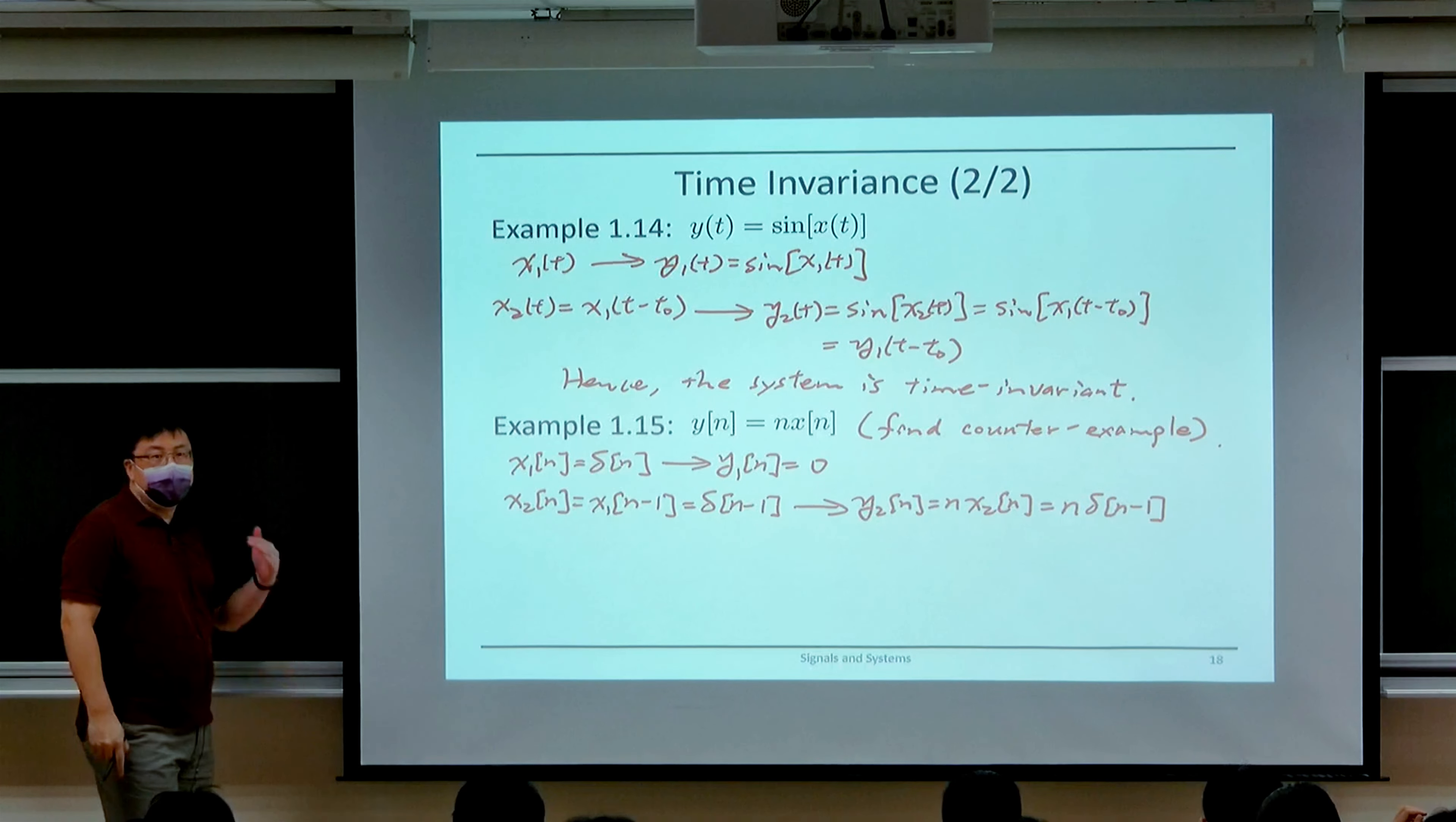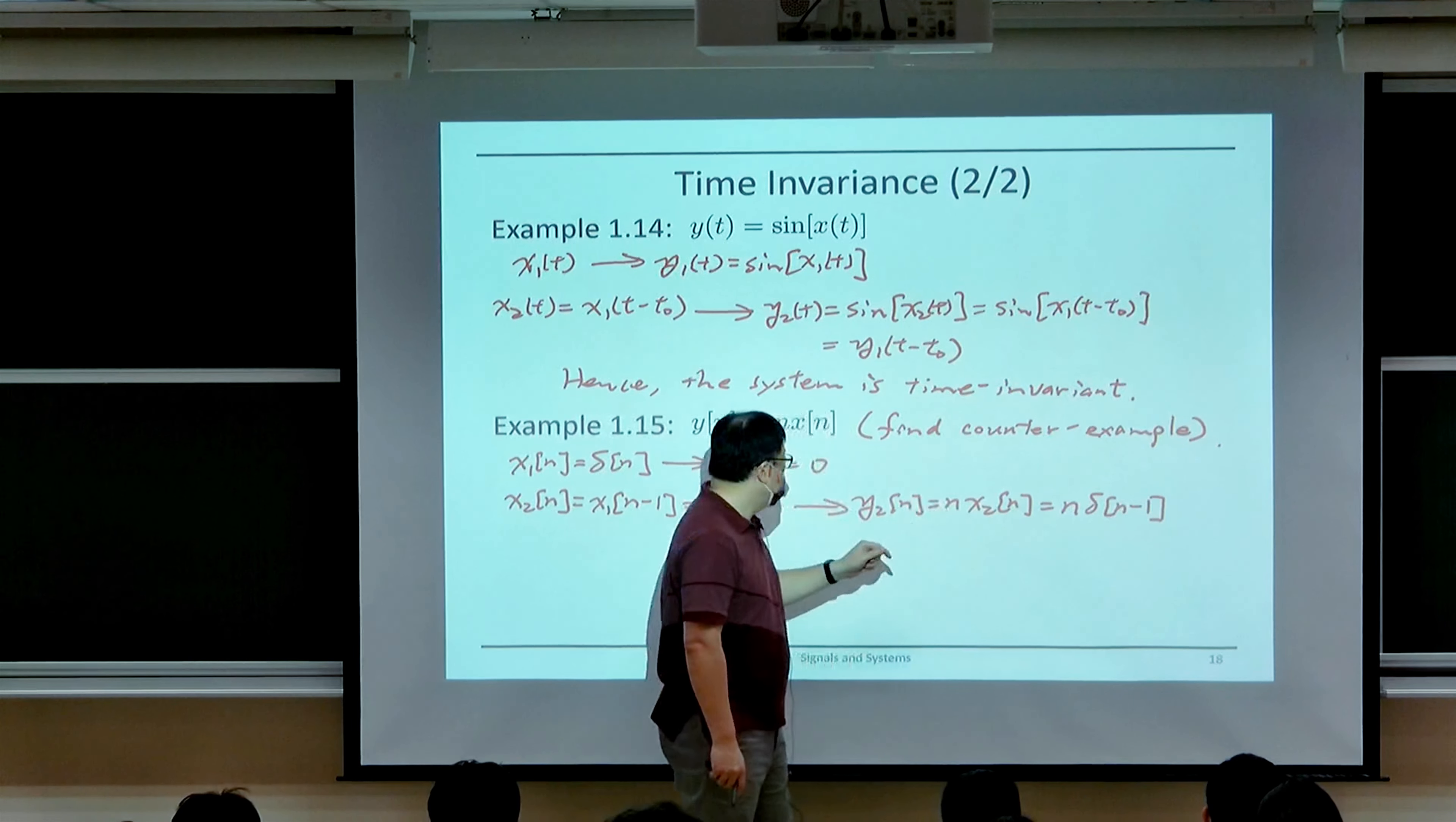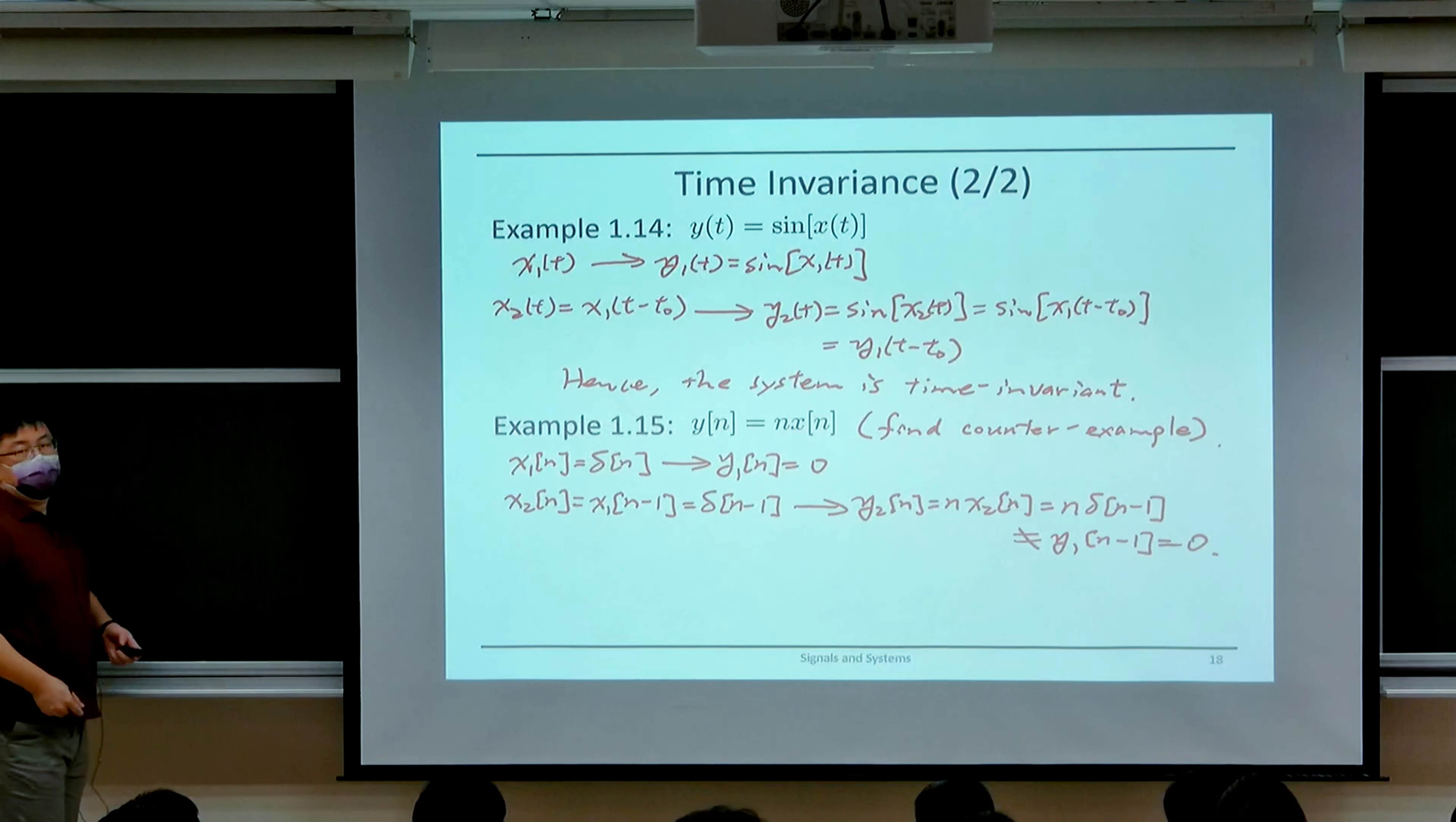Now, you can see that this function, y₂[n], is not always 0, because suppose you look at the time index 1. When n is equal to 1, this is 1 times delta of 0, which is also 1. So y₂[n] at time 1 has a non-zero value. So it is obviously not a time-shifted version of y₁. y₂[n] is not equal to y₁[n-1], which is 0.